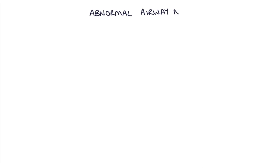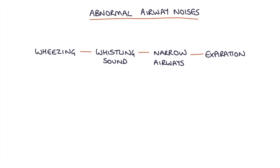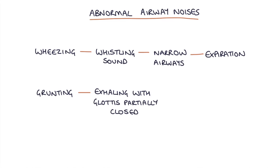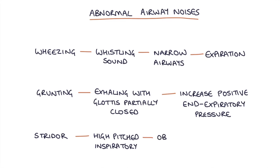Let's talk about abnormal airway noises. Wheezing is a whistling sound caused by narrow airways and is typically heard during expiration, so breathing out. Grunting is caused by exhaling with the glottis partially closed; the child does this to increase the positive end expiratory pressure in order to maintain airways that want to collapse. Stridor is a high pitched inspiratory noise caused by obstruction of the upper airway, for example in croup.